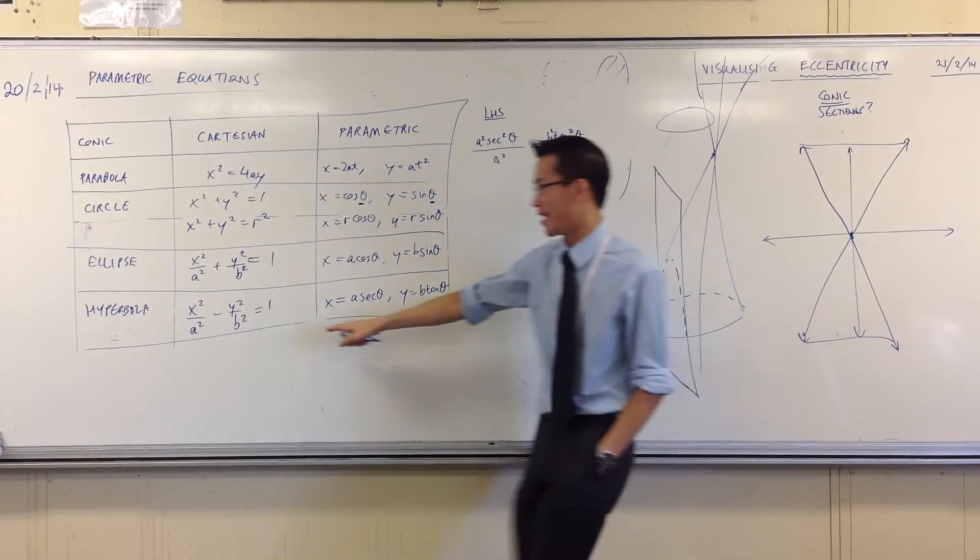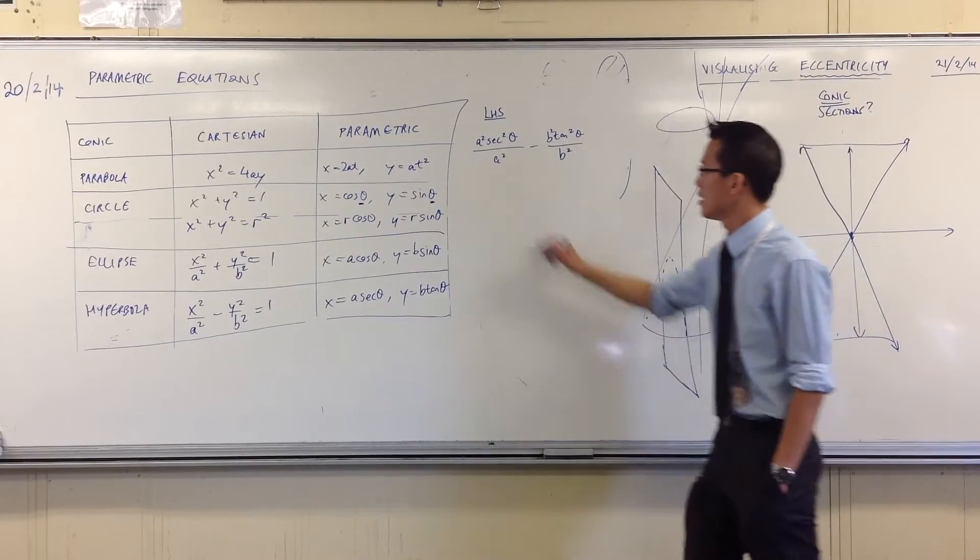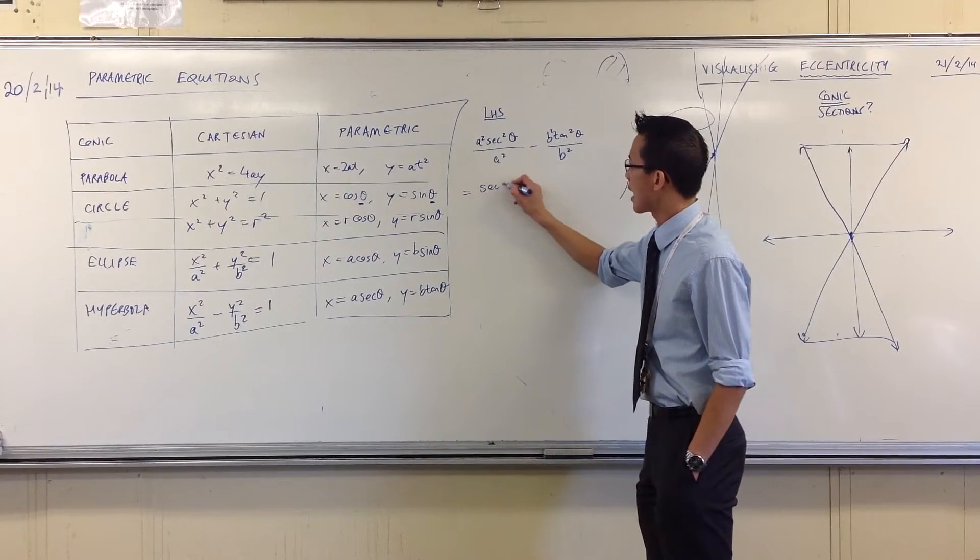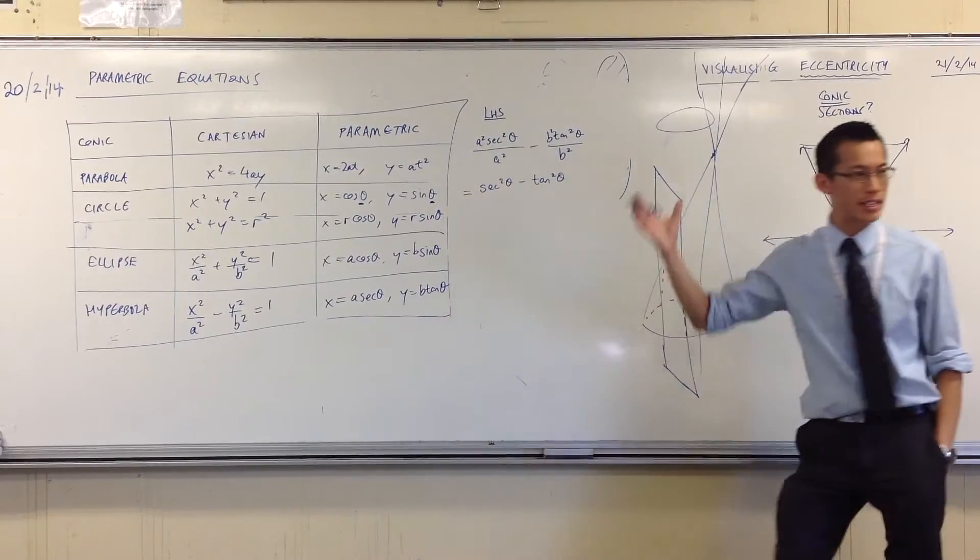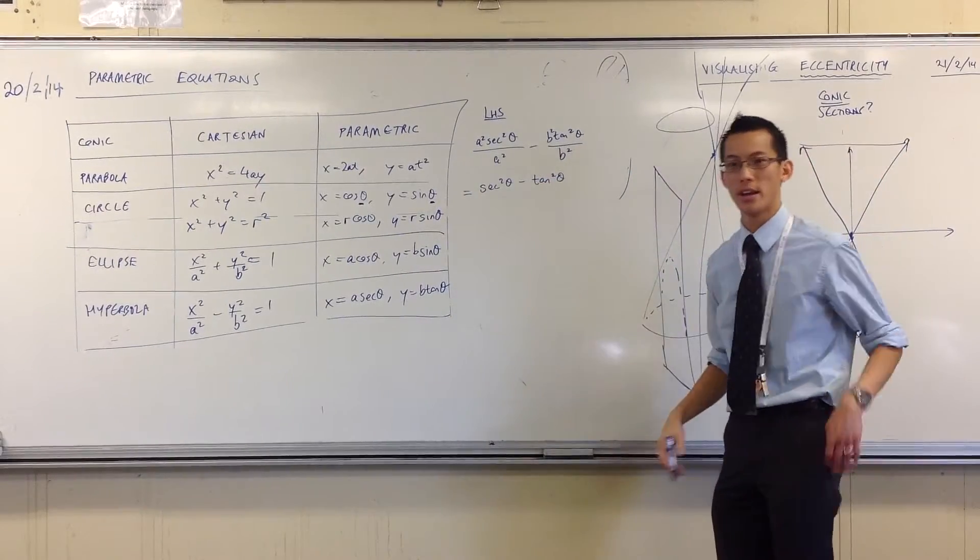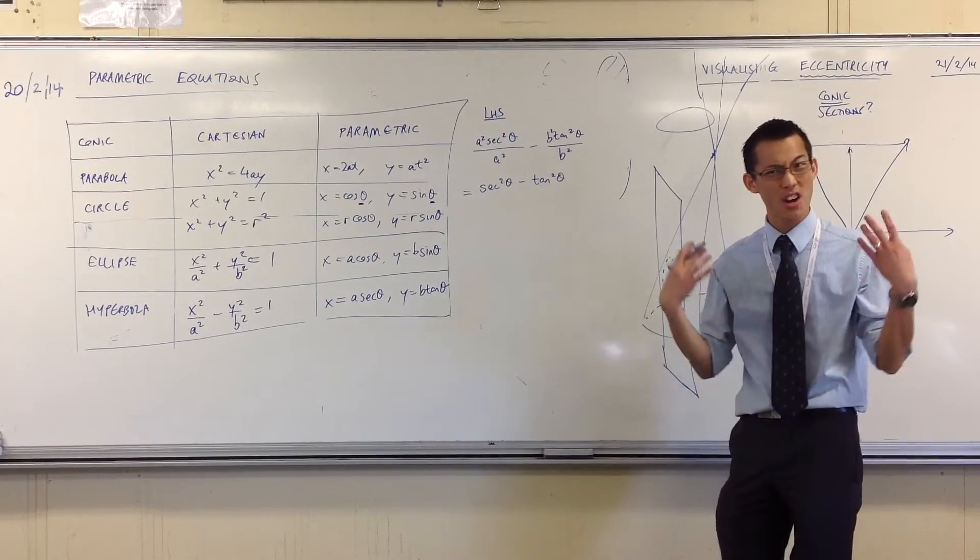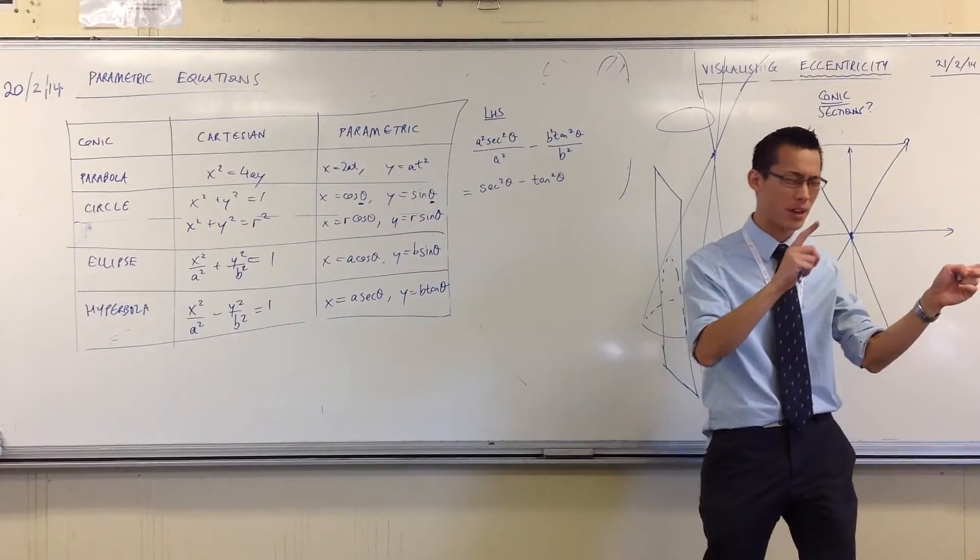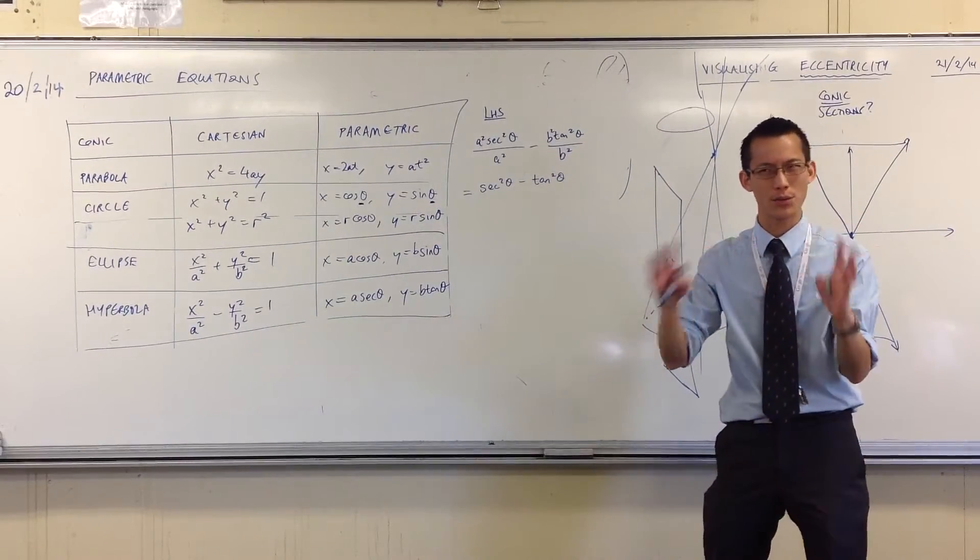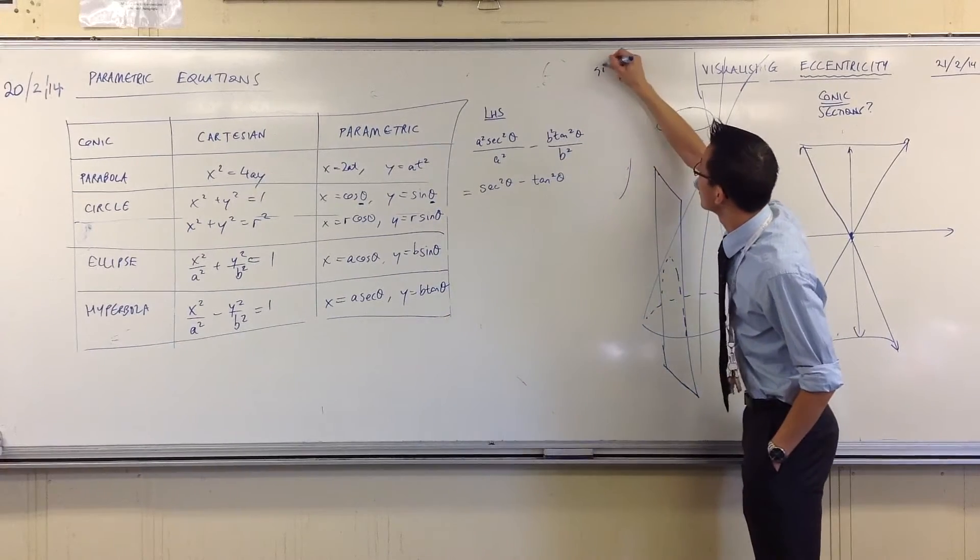So I know where I want to end. Right? So there should be some funky cancelling out here. The a squareds and the b squareds cancel. That's nice. Now, here you can see sec squared and tan squared. Clearly, there's the Pythagorean identity that's going to come into play. Now, I don't know about you, but I always found it a nightmare to try and remember, is it 1 minus tan squared is sec or the other way round? I always found that confusing. So here's the way that I do it. Just go back to the original.